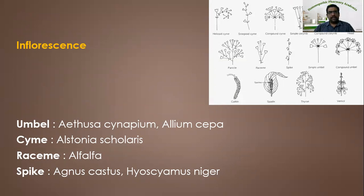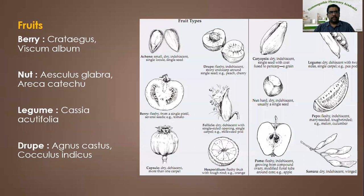Now let us see fruit. Fruit can be berry, nut, legume, or drupe. Berry can be seen in Crataegus or Viscum album, whereas in Aesculus glabra and Areca catechu the fruit is in the form of nut. In Cassia acutifolia the fruits are in the form of legume.